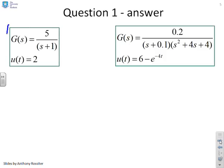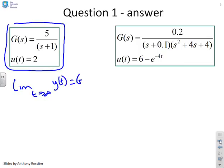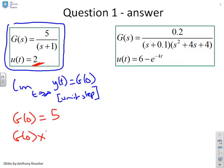If we look at the top left, first example we've got G(s) equals 5 over s+1 and u(t) equals 2. I won't write this every time, but we said that the limit as t goes to infinity of y(t) is G(0), and that was for a unit step. Now in this particular case, you'll notice that u is 2, it's not 1. So what we're going to get is G(0) equals 5, and therefore G(0) times 2 equals 10. The answer to this first one is the limit as t goes to infinity of y(t) will be 10.